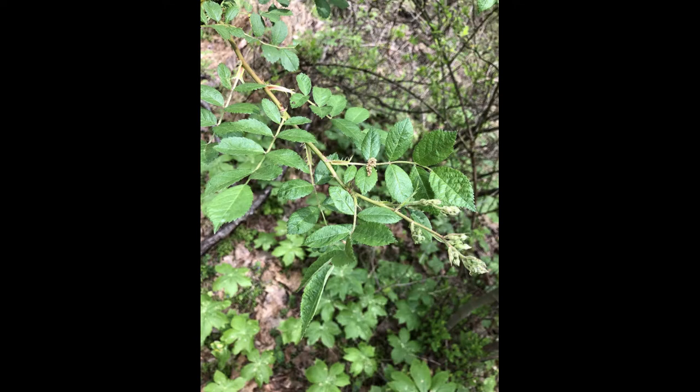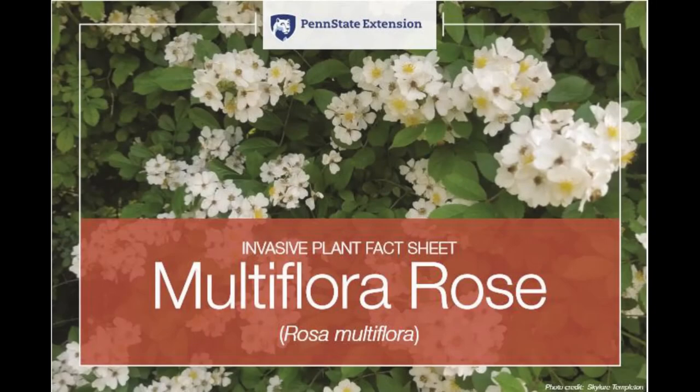Young plants can be pulled, but older, larger ones will take a lot more work. The full root system needs to be removed to prevent them from returning. The usual method is to mow and then put herbicide treatments on the roots. Penn State Extension has more information on this and other invasive plants, as well as more detail on the best available removal method.